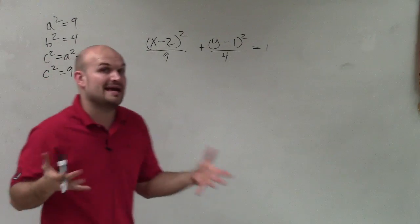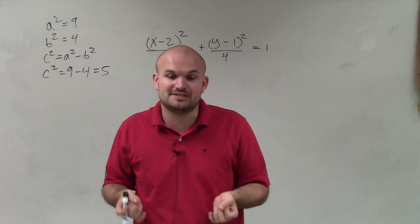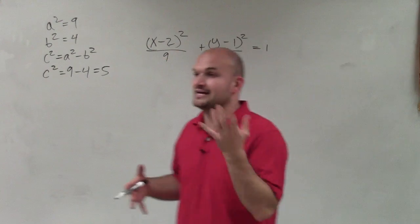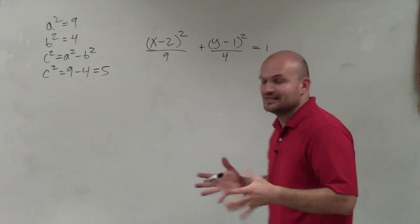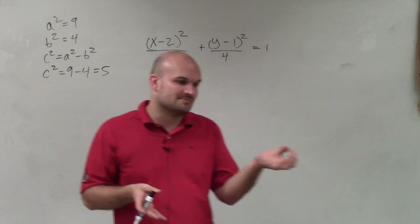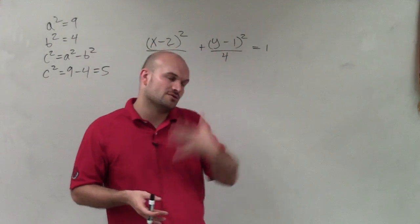Now I've found my a, b, and c, and that's going to be very helpful for me to identify how to find the vertices, co-vertices, as well as the foci. The next thing I need to do is identify the center and also identify where is my major axis—is it going to be horizontal or vertical?